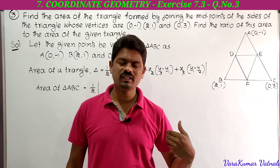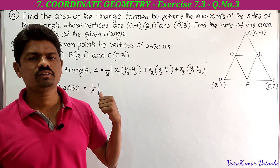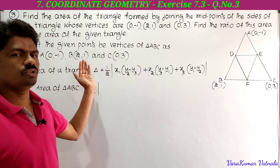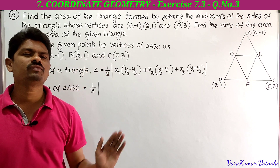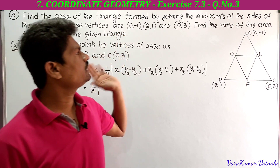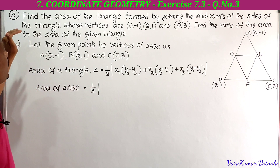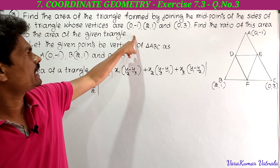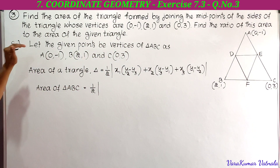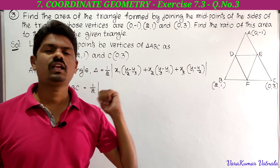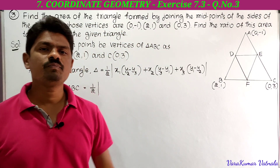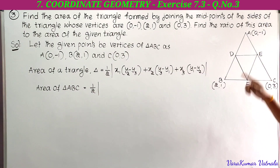Hi, hello, welcome to our channel Learn More Maths. Today we are going to solve a problem from Exercise 7.3 — this is the third problem. We have already completed the first and second problems in Exercise 7.3. This third problem is also related to area of the triangle. Find the area of the triangle formed by joining the midpoints of the sides of the triangle whose vertices are given.